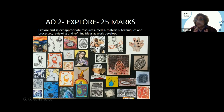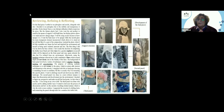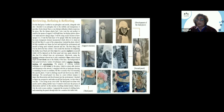AO2, explore, is also 25 marks — reviewing and refining. When looking at reviewing and refining, the student has actually looked at developing the final piece: what mediums has she used, which artist has helped her, and how has she developed her thought process? All of this is reflected upon as she has progressed. If you read the slide, you will see that she has used artistic language to address reviewing and refining. It is very important for the student to use artistic language — some of that artistic language has been underlined.